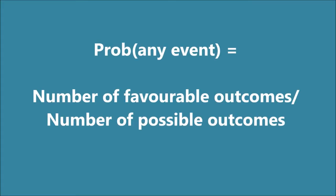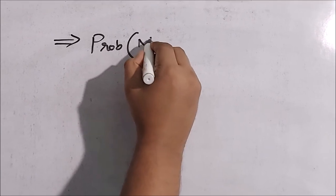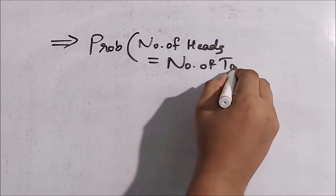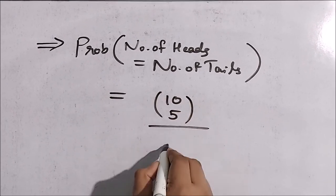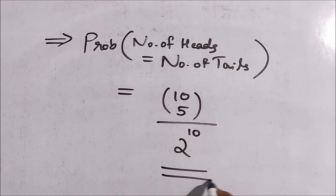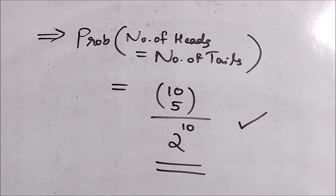Now let's solve it. The probability of any event is the number of favorable outcomes divided by the number of possible outcomes. An event is a subset of the sample space, and its cardinality divided by the total possible outcomes gives the probability. Here, the number of favorable outcomes is 10 choose 5 and the number of possible outcomes is 2 raised to 10. Hence, the required probability that the number of heads equals the number of tails when a coin is tossed 10 times is 10 choose 5 divided by 2 raised to 10.